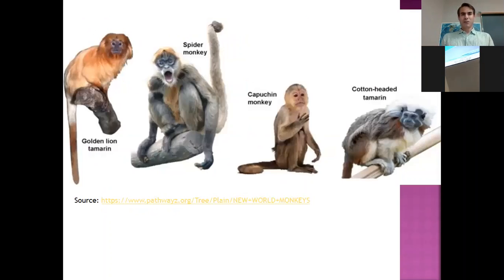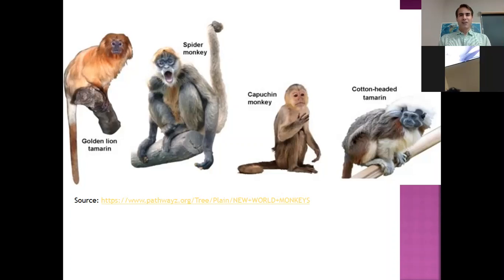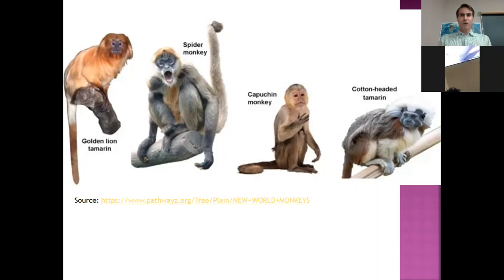Here are some pictures of the New World monkeys: the tamarin, the spider monkey, the capuchin monkey, and the cotton-head tamarin. You can see some of those prehensile tails that can curl around and grasp things. These are all arboreal — tree-dwelling — they tend to be small and kind of screechy. Sometimes people will go to South America, look at these monkeys, and say they don't see how humans could be related to monkeys. And I can see that, because this is 30 to 40 million years of evolutionary distance. The New World monkeys are pretty far away from us evolutionarily speaking.